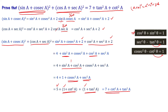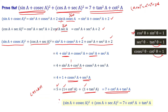So LHS = 7 + cot²a + tan²a, which equals RHS = 7 + tan²a + cot²a. Since we started with LHS and arrived at RHS, we can say LHS = RHS. Therefore, (sin a + cosec a)² + (cos a + sec a)² = 7 + tan²a + cot²a is proved.